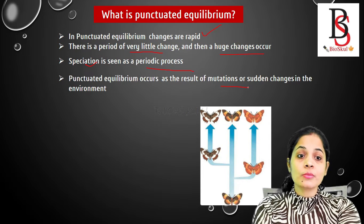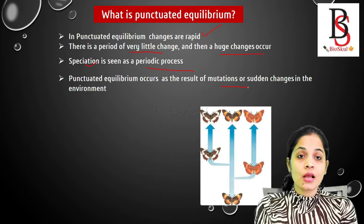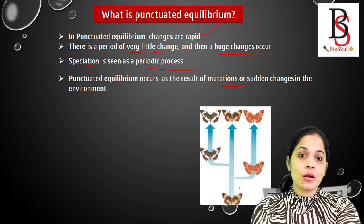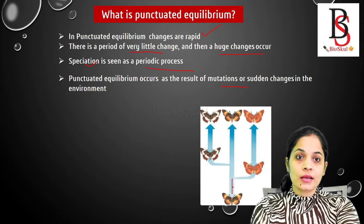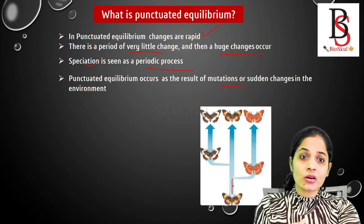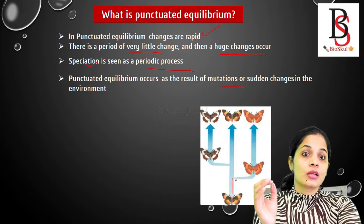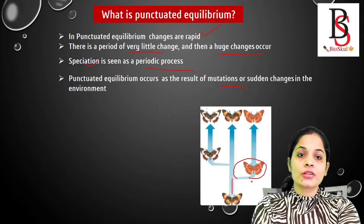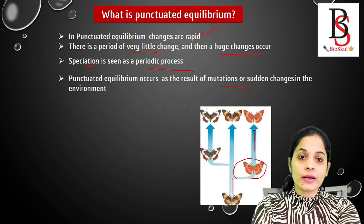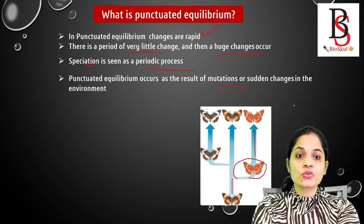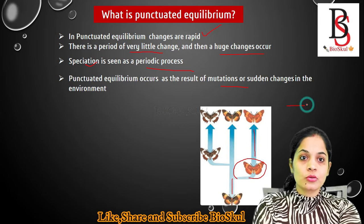Punctuated equilibrium occurs either because of a change in environmental conditions or by mutation. For example, consider a butterfly: there is very little change for a period of time, then because of a mutation or a change in the environmental condition, it suddenly and rapidly changes into a new species. Then there is again a constant period of no change or very little change. This pattern — period of no change, then a huge change — is known as punctuated equilibrium.